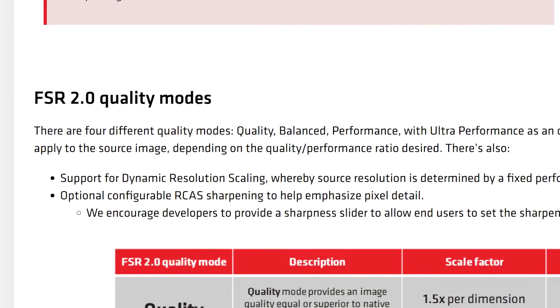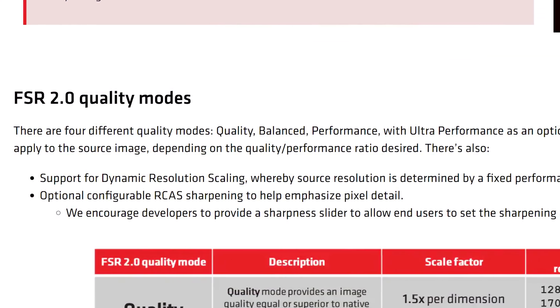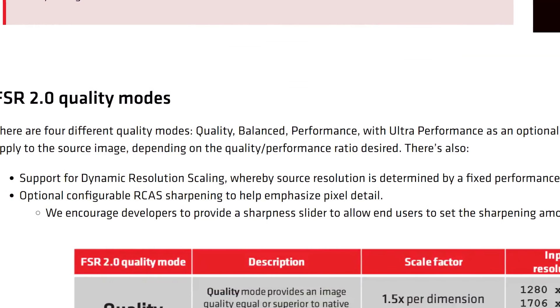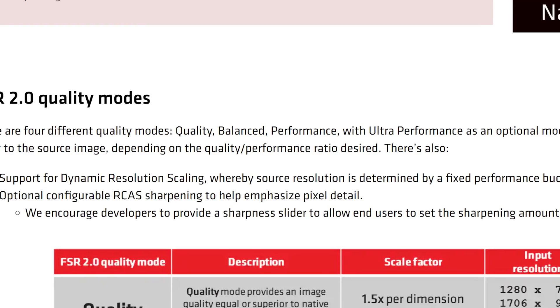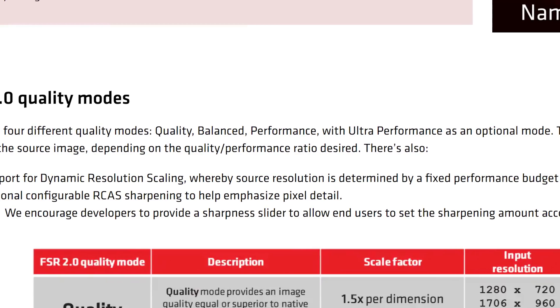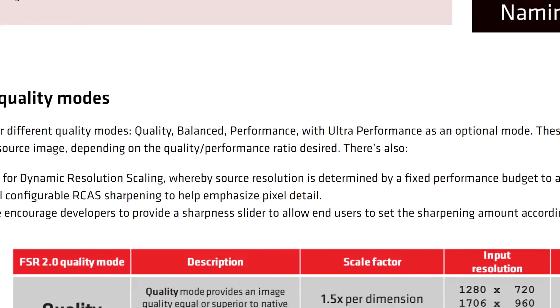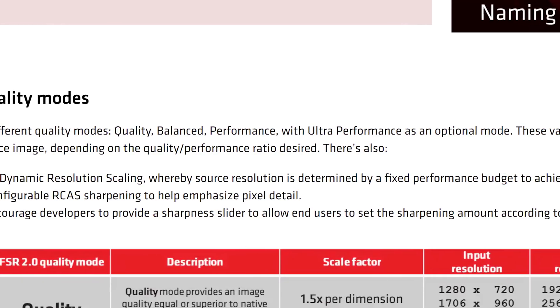It's also good to hear that AMD is encouraging developers to provide optional configurable RCAS sharpening as a sharpness slider. Throughout a lot of testing of upscaling and sharpening technologies, the amount of sharpening required really varies depending on the game and your playing situation — things like display size and resolution — and you might also have a personal preference for how sharp you want the image to be. I hope most developers implementing FSR 2.0 do opt for the sharpening slider for this very reason.